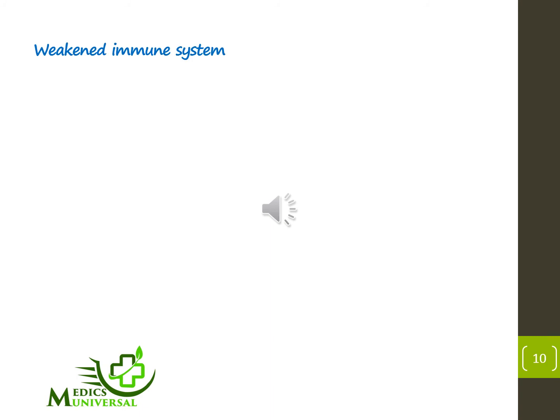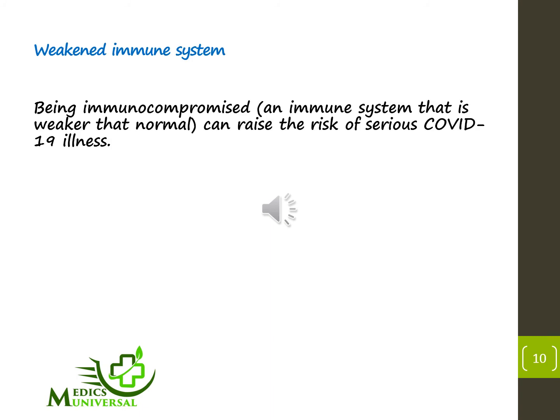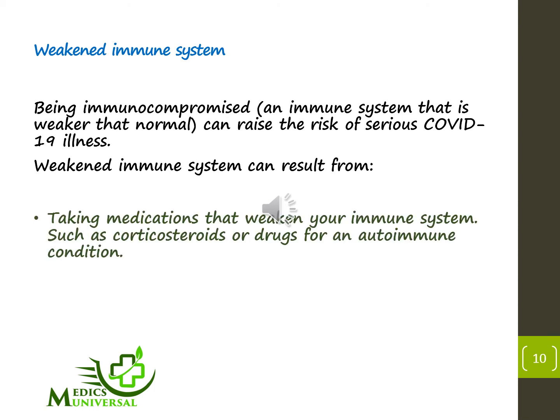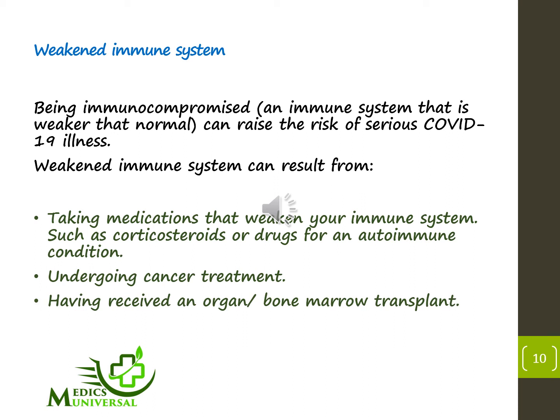Number three, weakened immune system. Being immunocompromised or having an immune system that is weaker than normal can raise the risk of serious COVID-19 illness. A weakened immune system can result from taking medication that weakens your immune system such as corticosteroids or drugs for an autoimmune condition, undergoing cancer treatment, or having received an organ or bone marrow transplant.